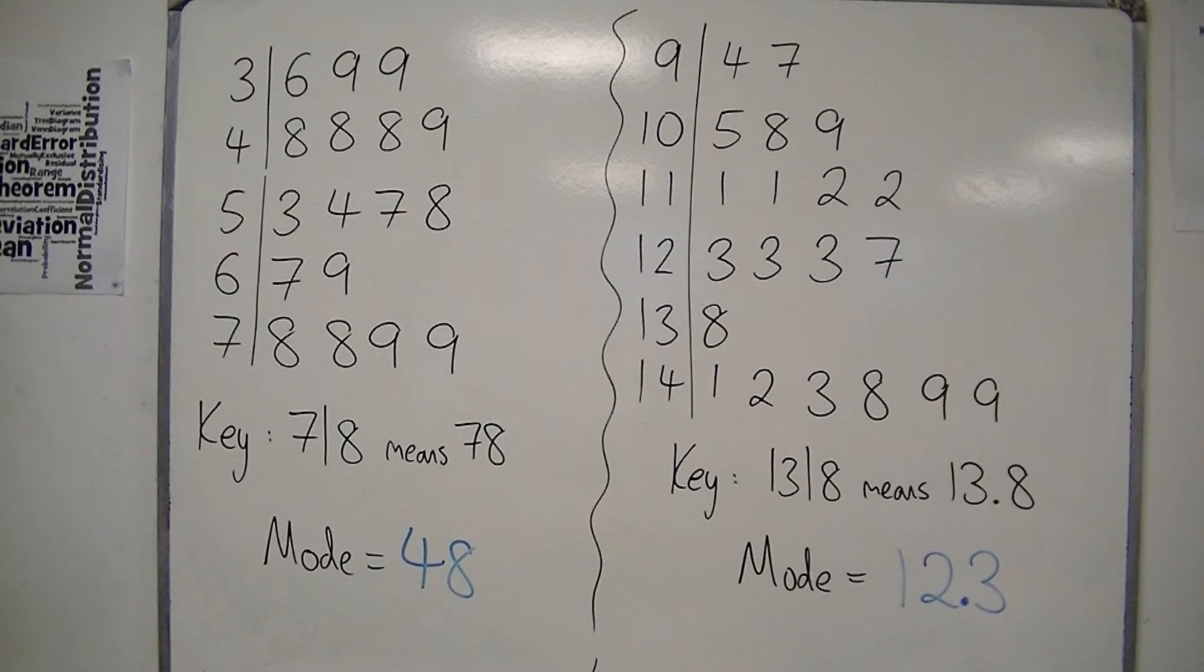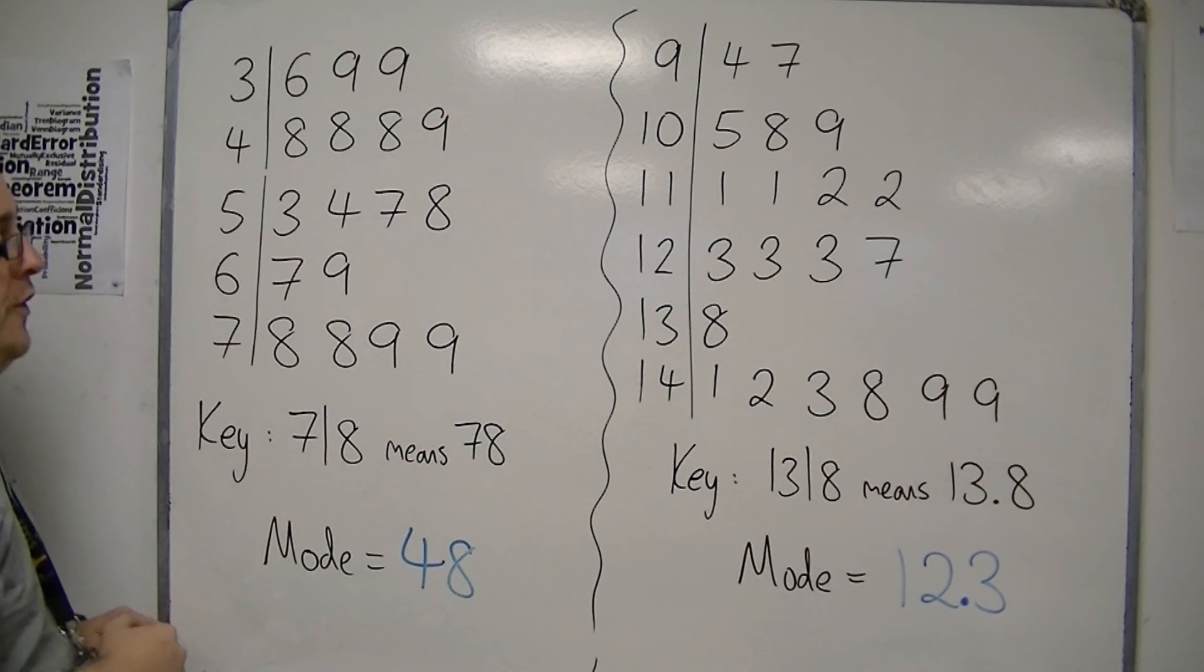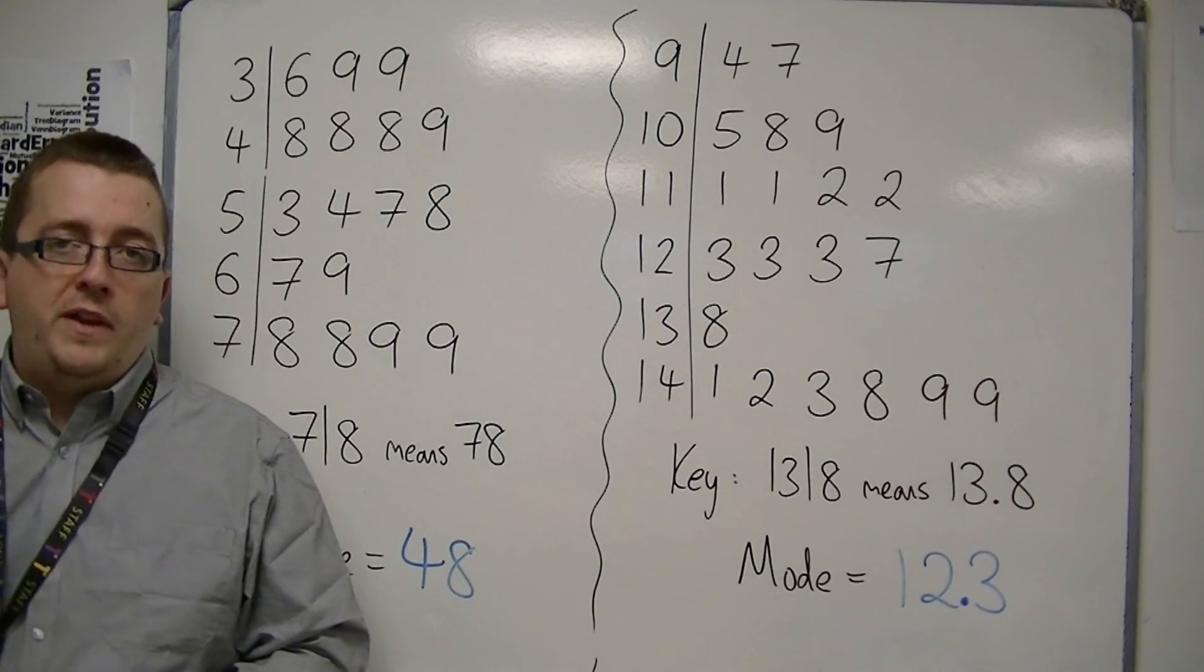So make sure that you've read that very carefully. So 48 was the mode for the first example, while 12.3 was the mode for the second.